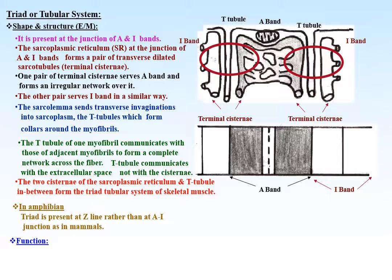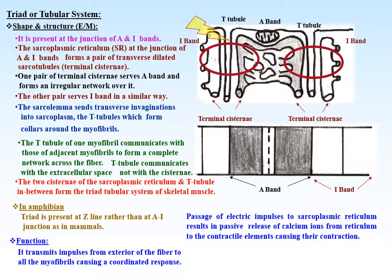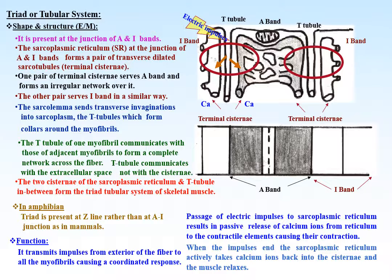Function of the triad tubular system: it transmits impulses from the exterior of the fiber to all the myofibrils, causing a coordinated response. Passage of electrical impulses to the sarcoplasmic reticulum results in passive release of calcium ions from the reticulum to the contractile elements — the thick and thin myofilaments — causing these elements to contract. When the impulses end, the sarcoplasmic reticulum actively takes the calcium ions back into the system and the muscle relaxes.